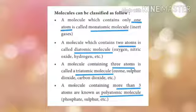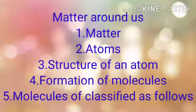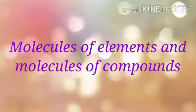Molecules containing more than three atoms are known as polyatomic molecules — examples include phosphate and sulfur. In this class we have learned about matter, the matter around us, what is meant by atoms, the structure of the atom, what is meant by molecules, and the formation and classification of molecules. In our next class we shall see about molecules of elements and molecules of some compounds. Thank you, children.